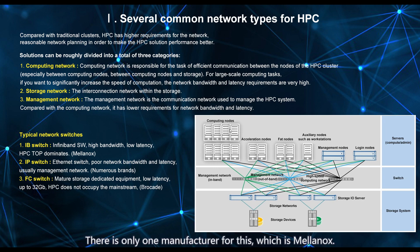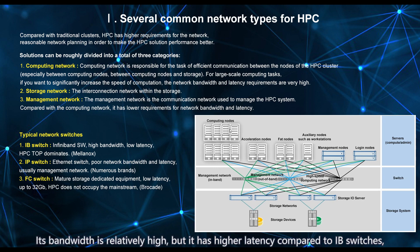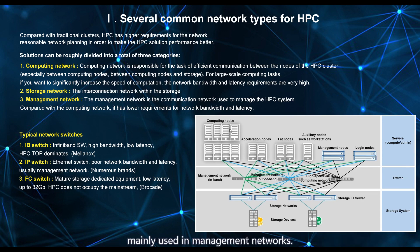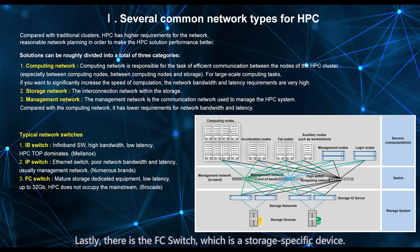There is only one manufacturer for IB switches, which is Mellanox. Another type is the IP switch, the most familiar switch type. Its bandwidth is relatively high, but it has higher latency compared to IB switches, mainly used in management networks. There are many brands for this, such as Cisco, H3C, Huawei, etc.